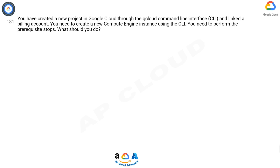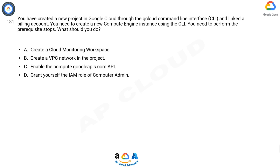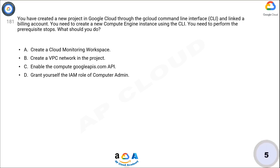Question 181: You have created a new project in Google Cloud through the Cloud Command Line Interface (CLI) and linked a billing account. You need to create a new Compute Engine instance using the CLI. You need to perform the prerequisite steps. What should you do? A) Create a Cloud Monitoring workspace. B) Create a VPC network in the project. C) Enable the compute.googleapis.com API. D) Grant yourself the IAM role of Compute Admin.